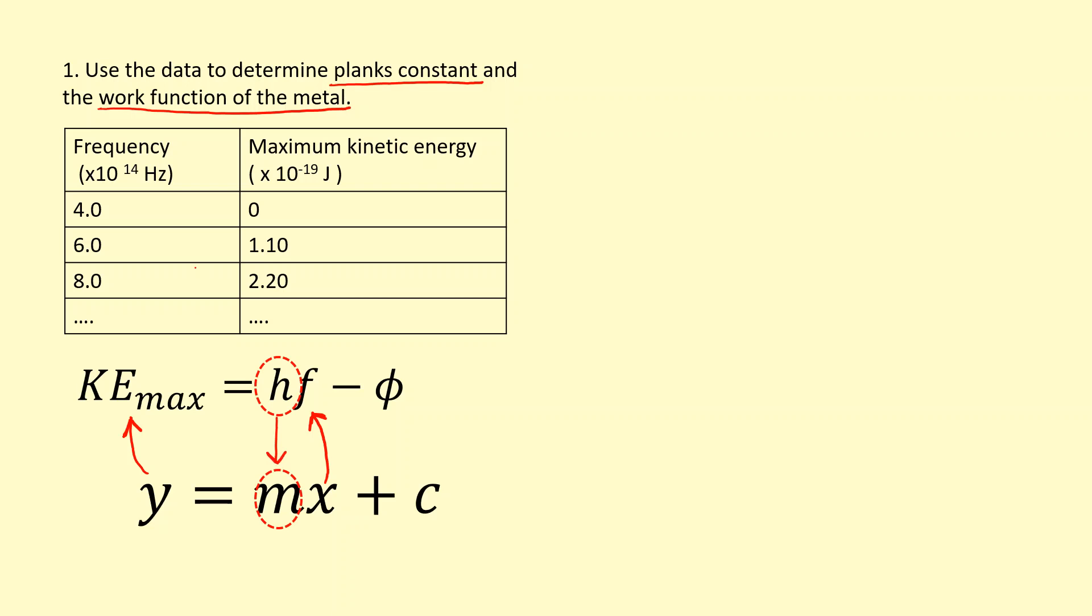And the thing that's being added to it, the plus c part, is going to be minus of the work function here. So this would give us a straight line like this, where the gradient is going to equal Planck's constant. And the y-intercept is going to equal negative of the work function.